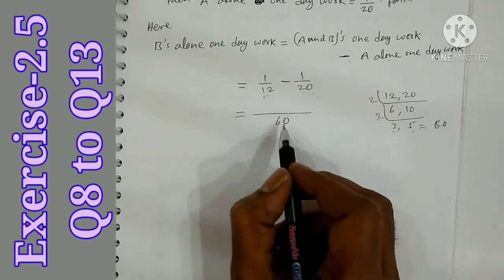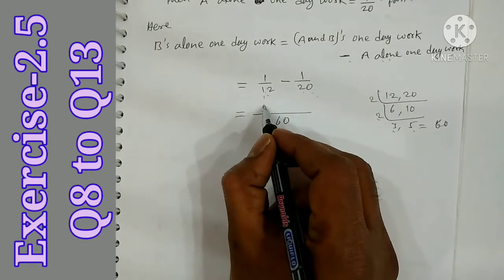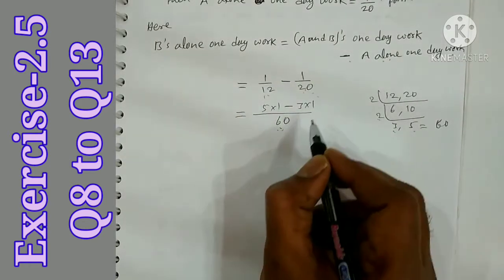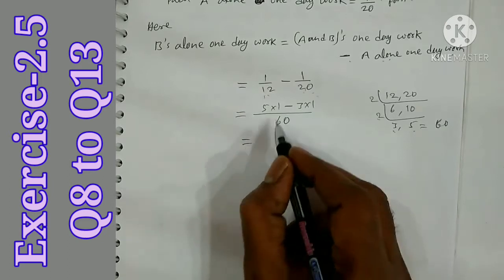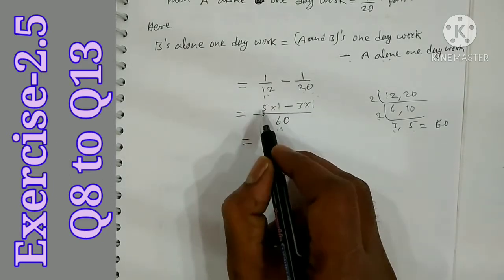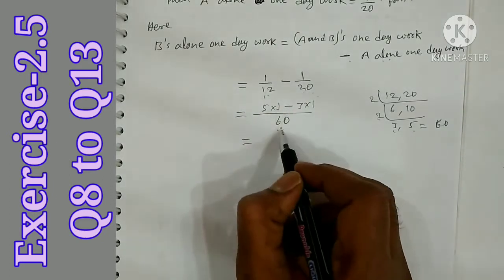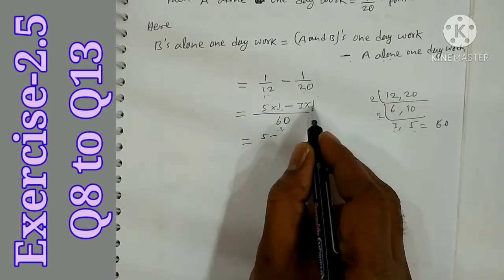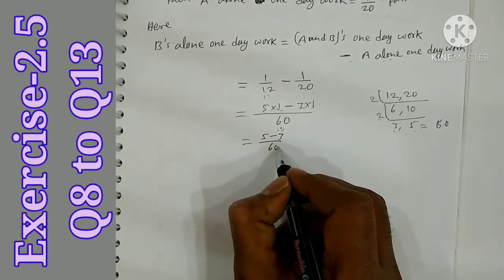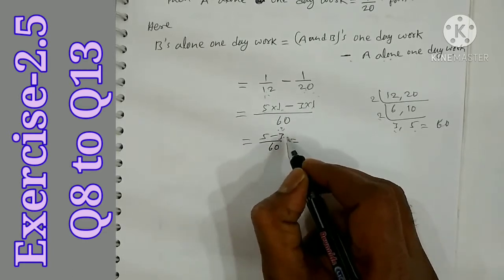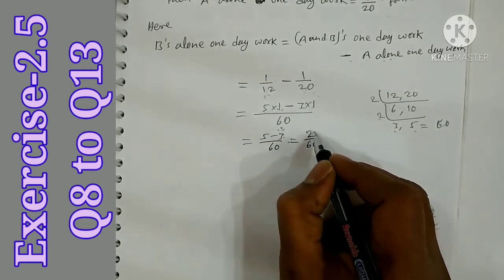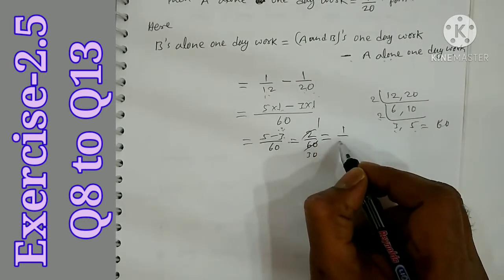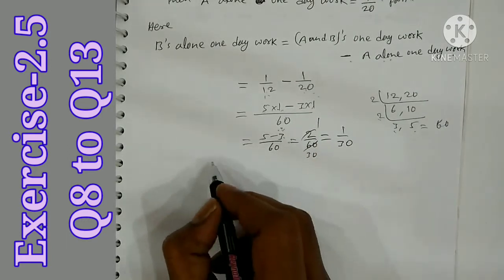So 1 by 12 minus 1 by 20 with LCM 60: 12 times 5 gives 5 into 1 = 5, and 20 times 3 gives 3 into 1 = 3. So 5 minus 3 equals 2 over 60, which simplifies to 1 by 30.